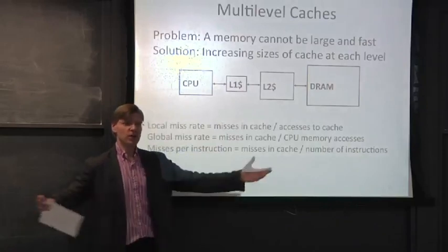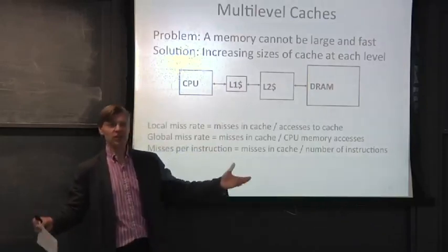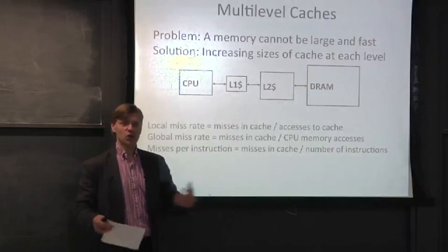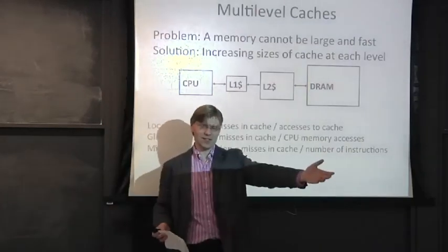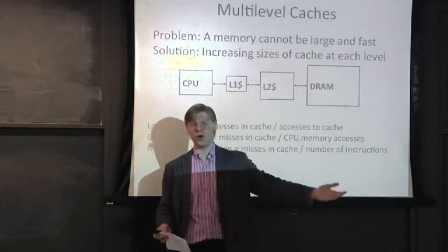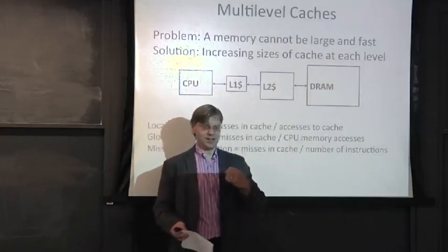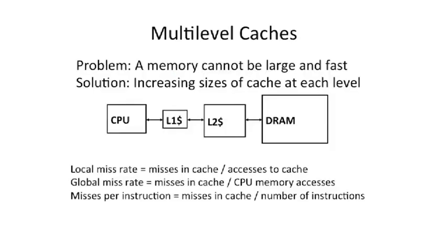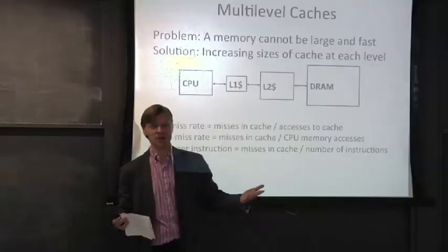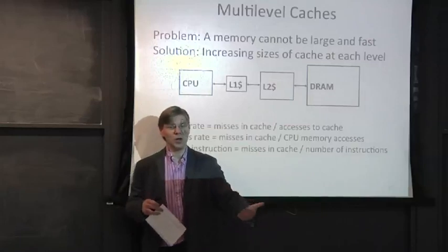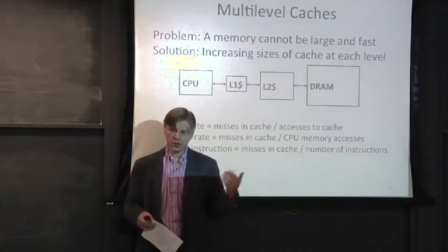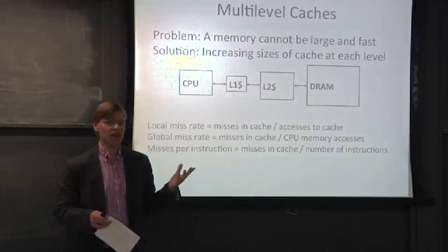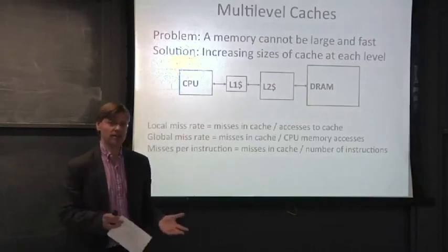The problem with a very large cache is that, by definition, if it's large and you don't want to violate the laws of physics, to reach the farthest extent of the cache you have to run a wire very, very far. That wire is by definition going to be slow — you can't travel faster than the speed of light, so distance becomes a limiting factor. You can't have something that is both large and fast memory.